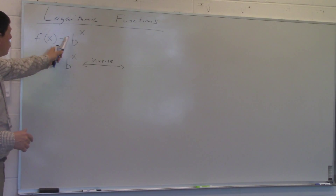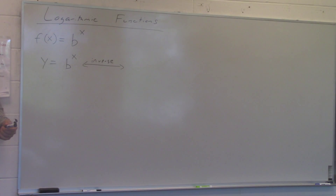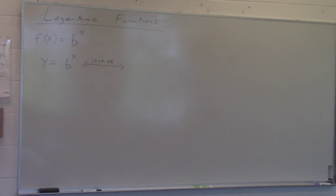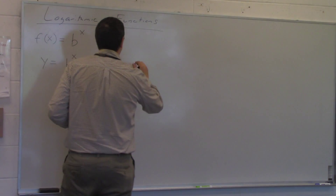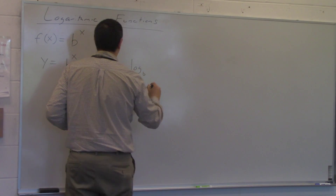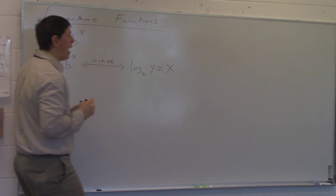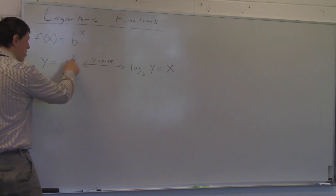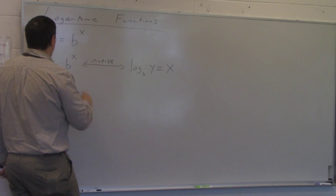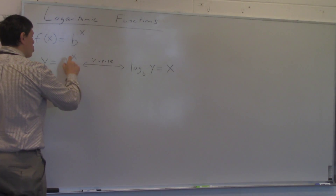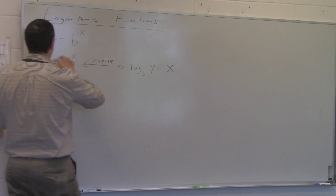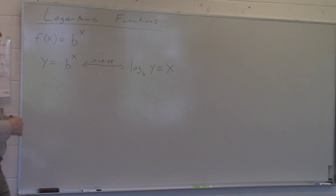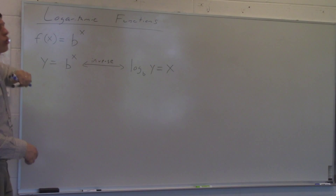If I have a function f(x) = b^x, that's an exponential function. What we want is the inverse of this. Writing it as y = b^x, the definition of a logarithmic function is: if y = b^x, then log base b of y equals x. Remember, a logarithm is an exponent — x is the exponent. The b is the base, so log base b of x is always going to equal your exponent when you're done.